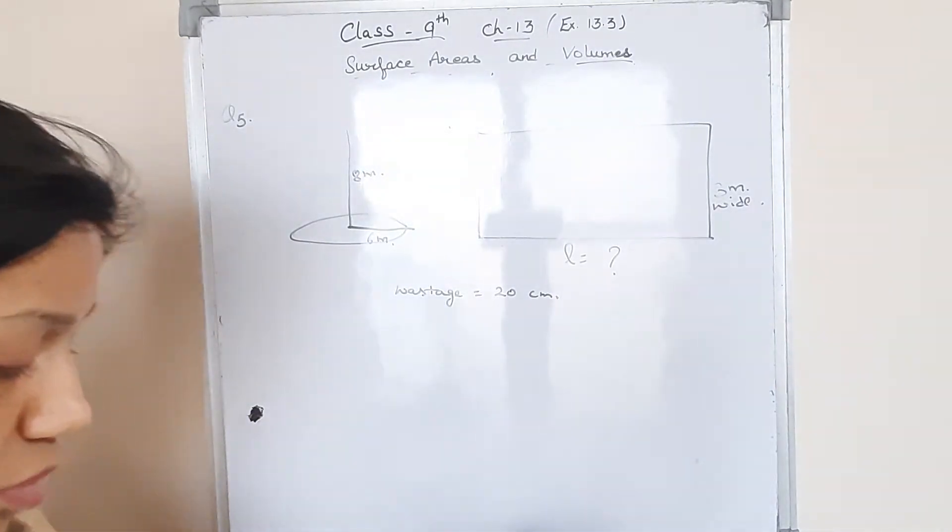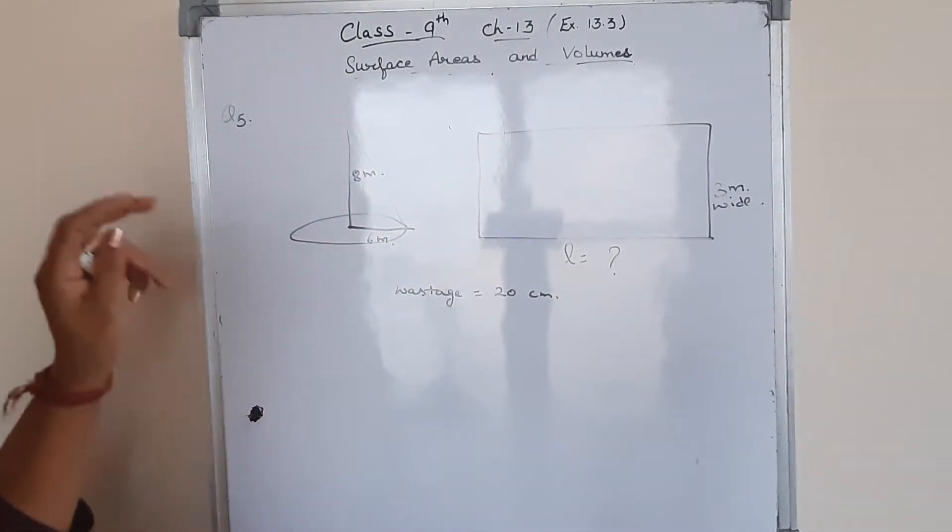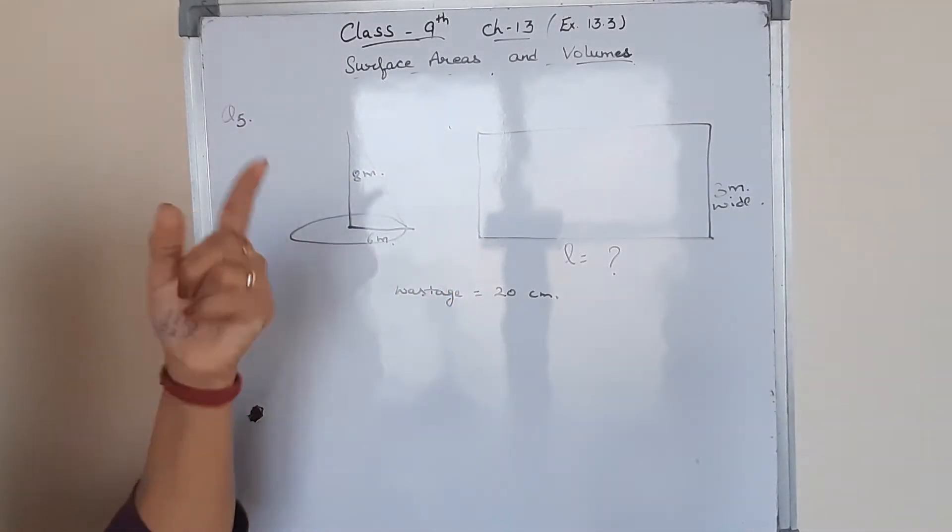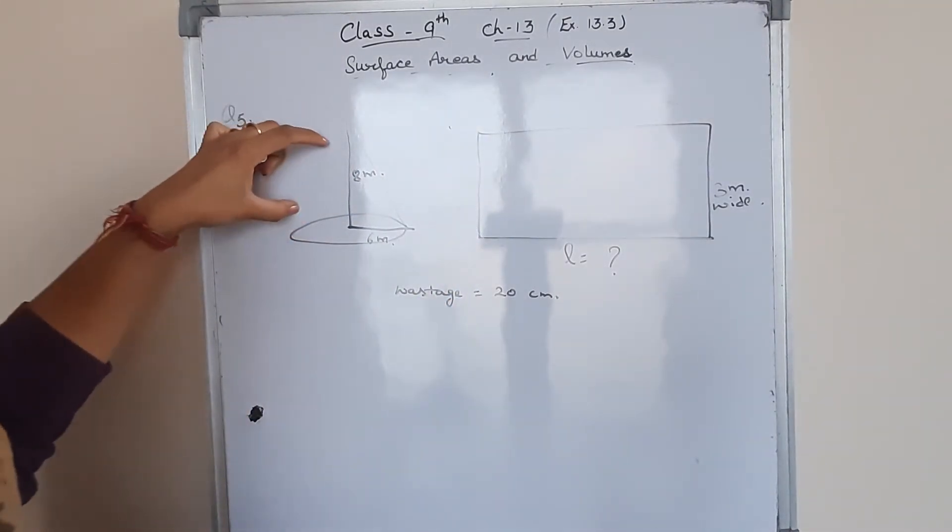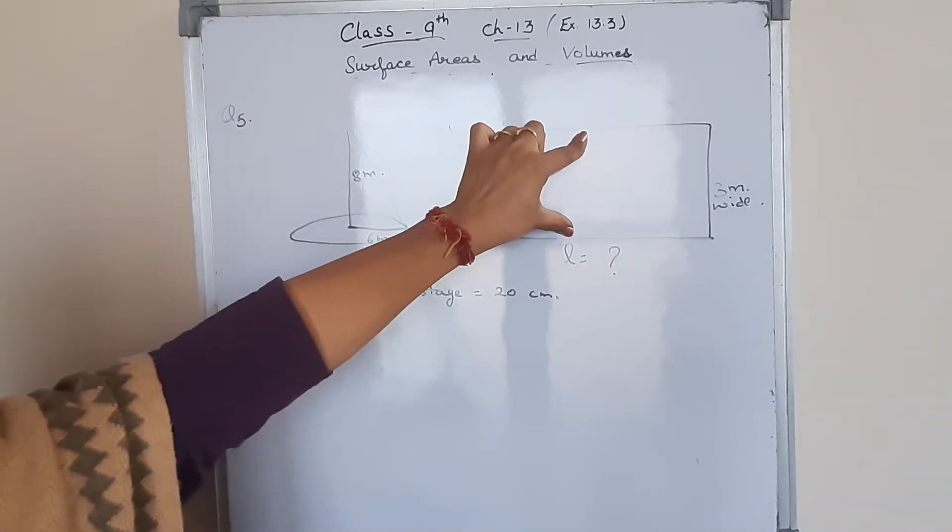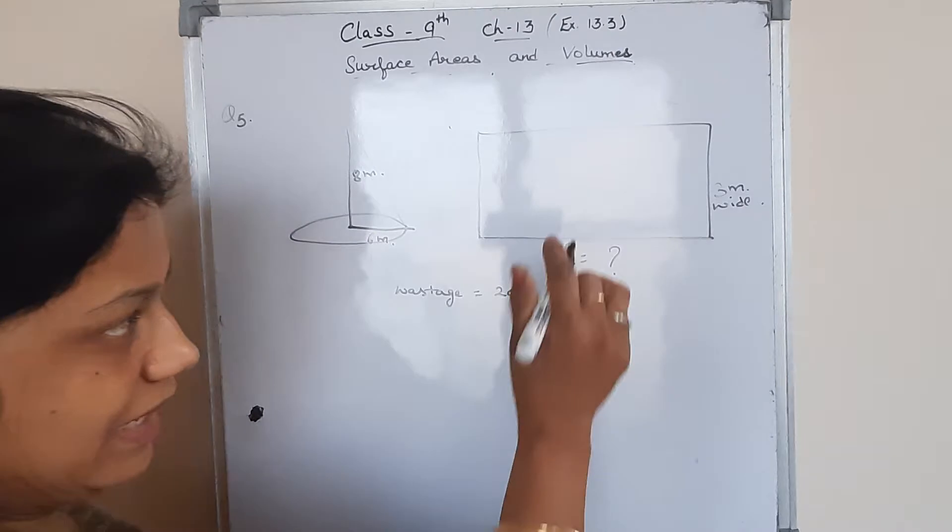So what you need to do, it's simple and easy question. You just need to find that the traplin is used in the upper portion. So obviously in the curved surface area, find the curved surface area and keep it equal to the area of the rectangle.